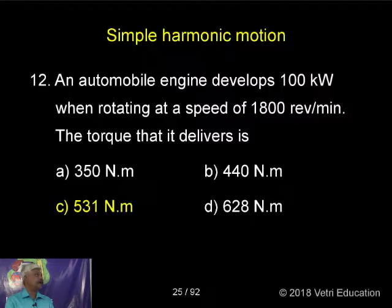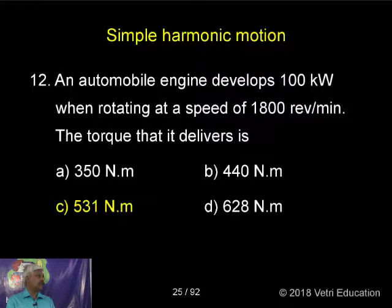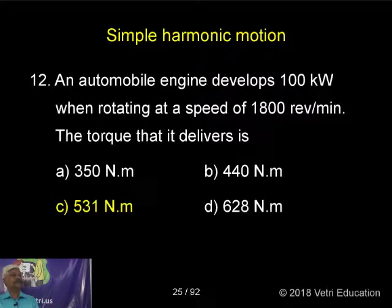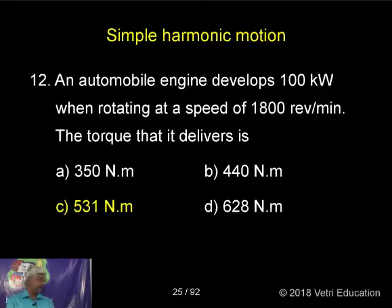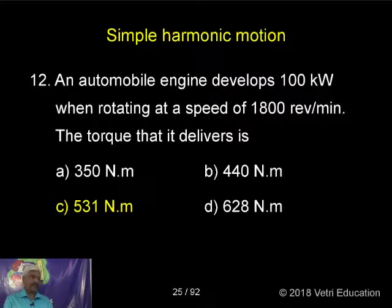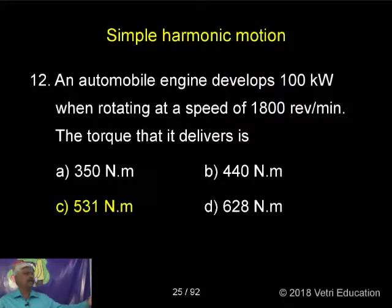An automobile engine develops 100 kilowatts when rotating at a speed of 1800 revolutions per minute. We need to find the torque that it delivers. In order to find out the torque — this is also a repeated type of problem.